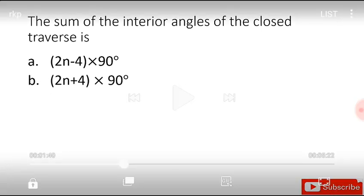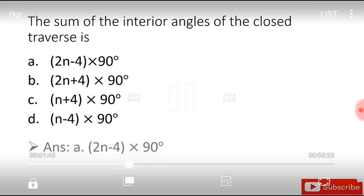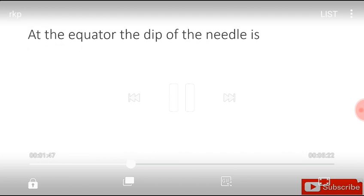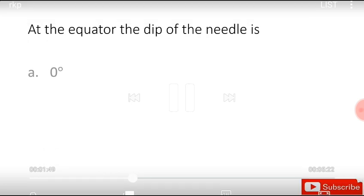2n minus 4 into 90 degree, 2n plus 4 into 90 degree, and the answer is 2n minus 4 into 90 degree. At the equator, the dip of the angle is 0 degree, 90 degree, 180 degree, or 45 degree, and the answer is 0 degree.